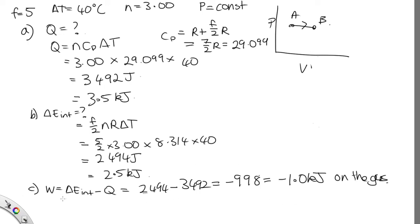And then part D said, what was the change in the rotational kinetic energy of the gas? Well, the gas has five ways of storing energy because the number of degrees of freedom is five.